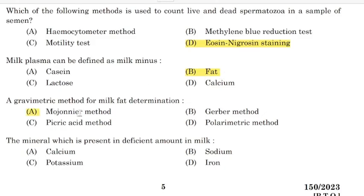A gravimetric method for milk fat determination. Correct answer: Option A. The mineral which is present in deficient amount in milk — Correct answer: Option D — Iron.